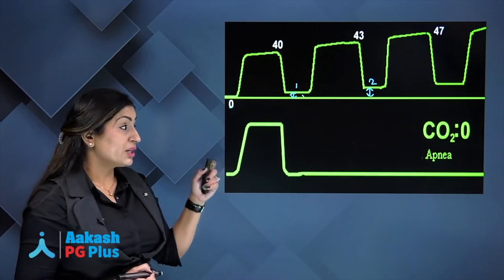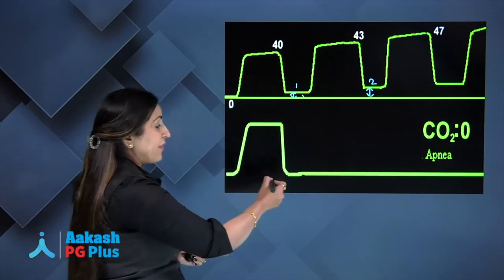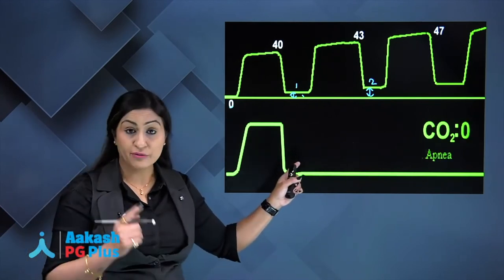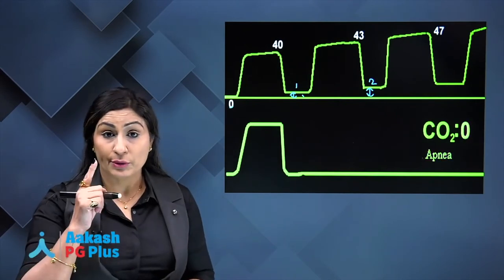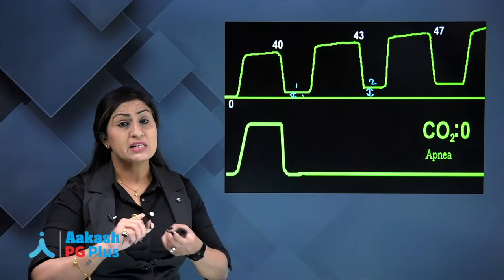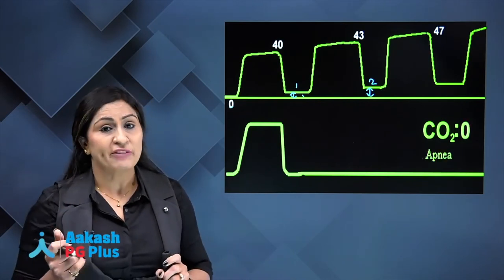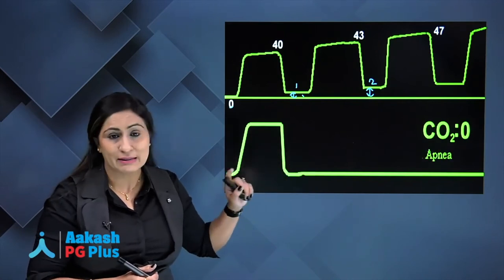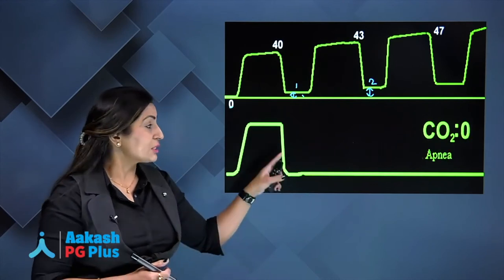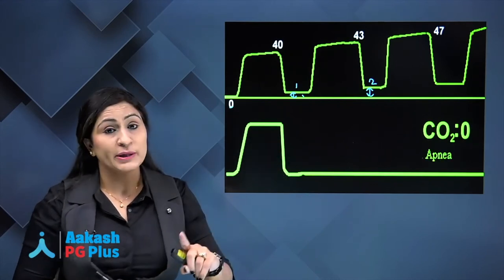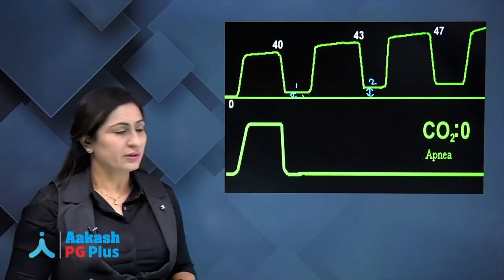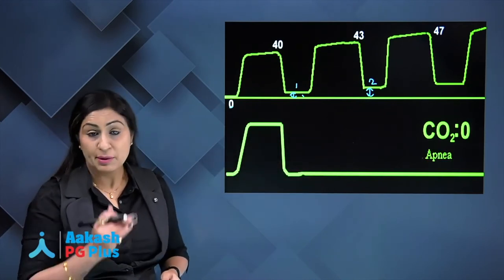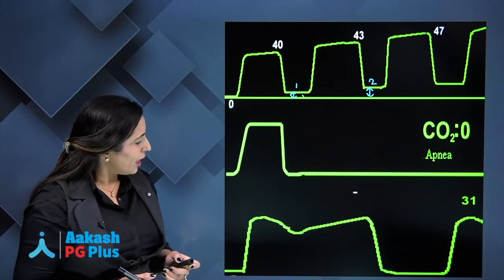This capnogram shows normal waveforms followed by a straight flat line — a red flag. This may mean you have dislodged the tube, the patient is not getting ventilated, or there is a disconnection with the ventilator tubing. This should trigger an immediate red alert, as the patient may not be getting ventilated or perfused. This pattern indicates apnea or disconnection.